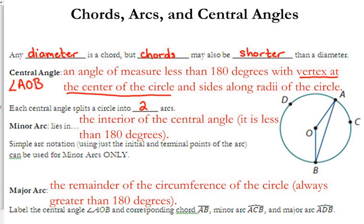Think minor, less. Minor arc is less than 180 degrees. The major arc is the remainder of the circumference of the circle. I'm going to let y'all write all that stuff down, and then I'm going to point it out on there.